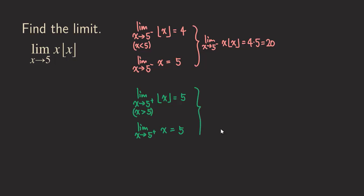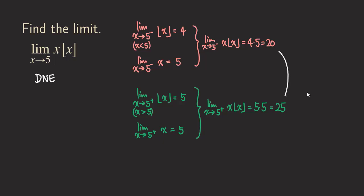Putting them together, because we are finding the product, the right-side limit of x times the floor function of x gives us 5 times 5, which is 25. Because the left-side limit (20) and the right-side limit (25) are not equal to each other, we say that the two-sided limit does not exist.